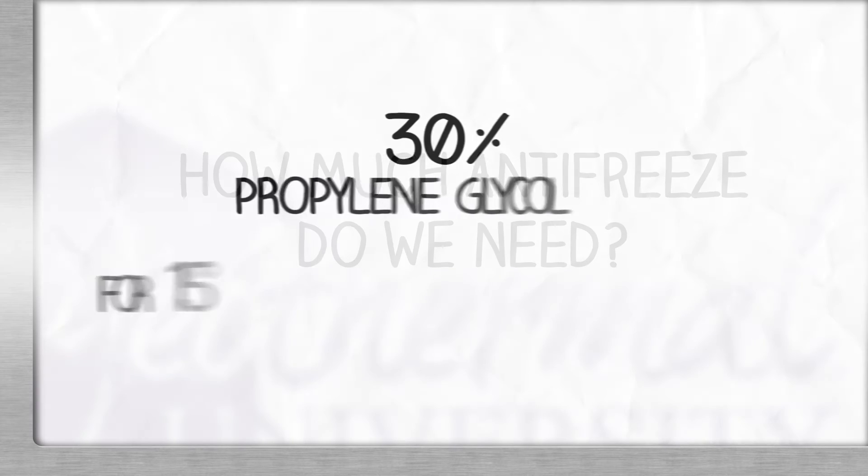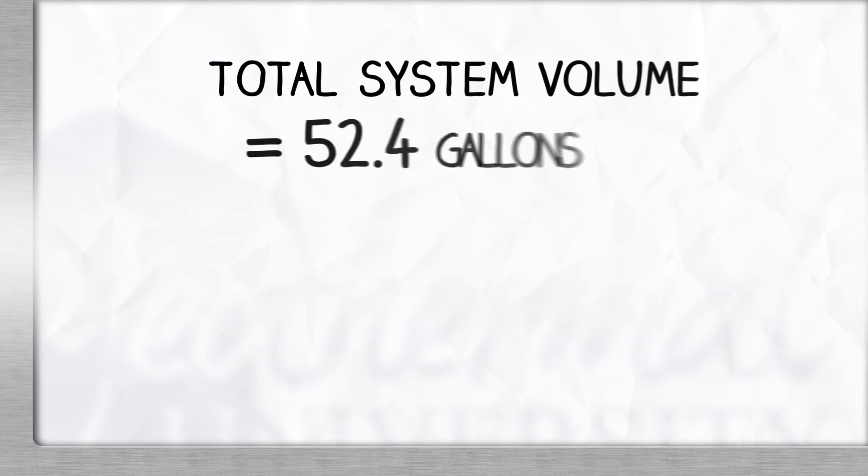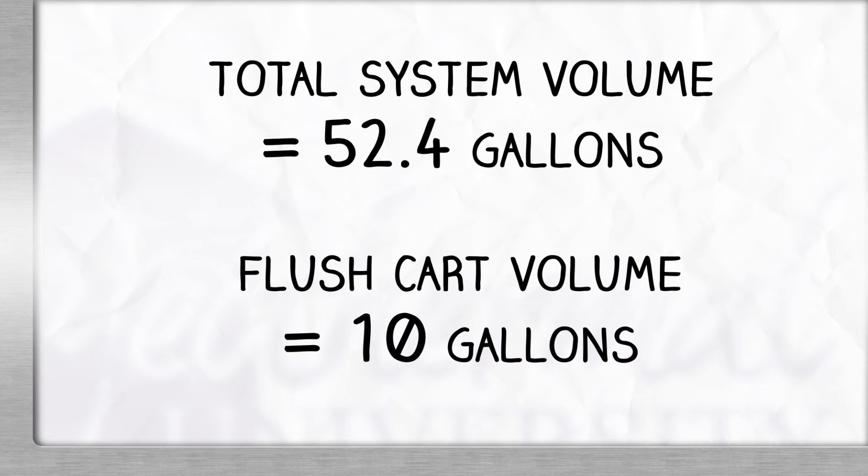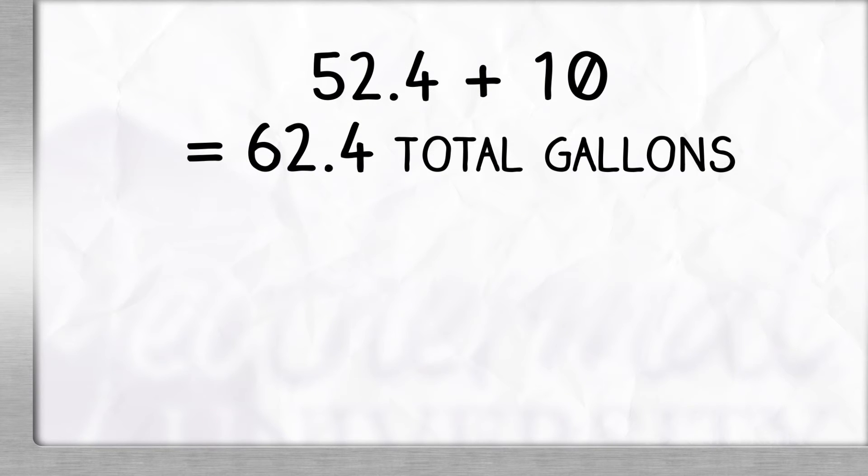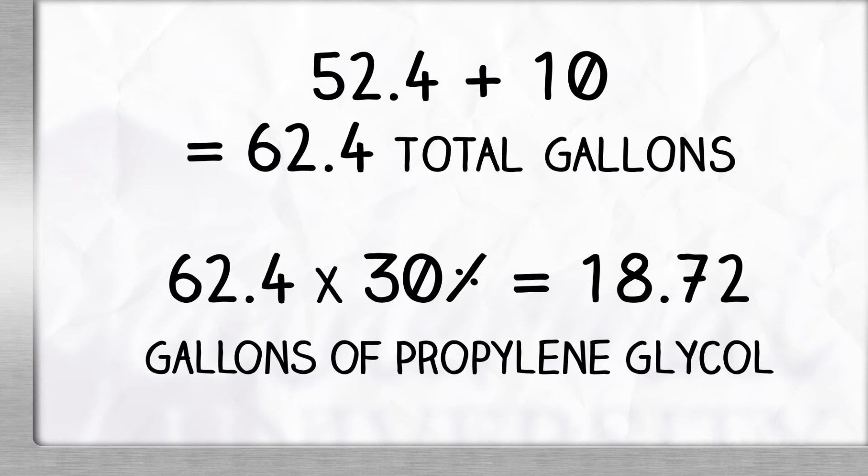So, how much antifreeze do we need? Vertical loops require 30% propylene glycol for 15 degree freeze protection. In our example, we have a total system volume of 52.4 gallons and a flush cart volume of 10 gallons. We added 52.4 system gallons plus 10 flush tank gallons to get a total of 62.4 gallons. We take our total gallons times 30% to get 18.72 gallons of propylene glycol.